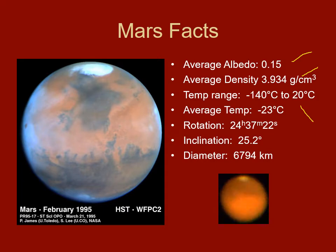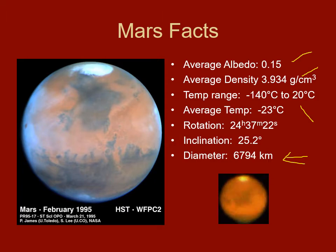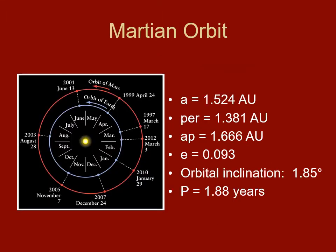The average temperature ranges from a low of minus 140 degrees Celsius — cold enough to freeze carbon dioxide, which is the main composition of the atmosphere — up to 20 degrees Celsius, like a very cool day on Earth. The average temperature is about minus 23 degrees Celsius, which is quite cold, like northern Canada cold. Rotation rate is just over 24 hours, tilt is about 25 degrees, and diameter is much smaller than Earth — you could fit almost eight Marses inside Earth.